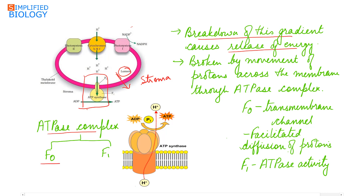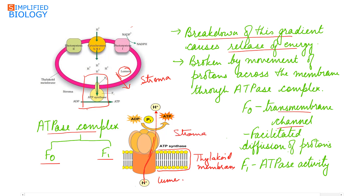This movement takes place with the help of an ATPase complex present in the thylakoid membrane. The ATPase complex has two parts: F0 and F1. F0 is a transmembrane channel — a proton tunnel — embedded in the thylakoid membrane. Through facilitated diffusion, protons move from the lumen into the stroma through this proton tunnel. As protons move through F0, a conformational change occurs at the F1 part.